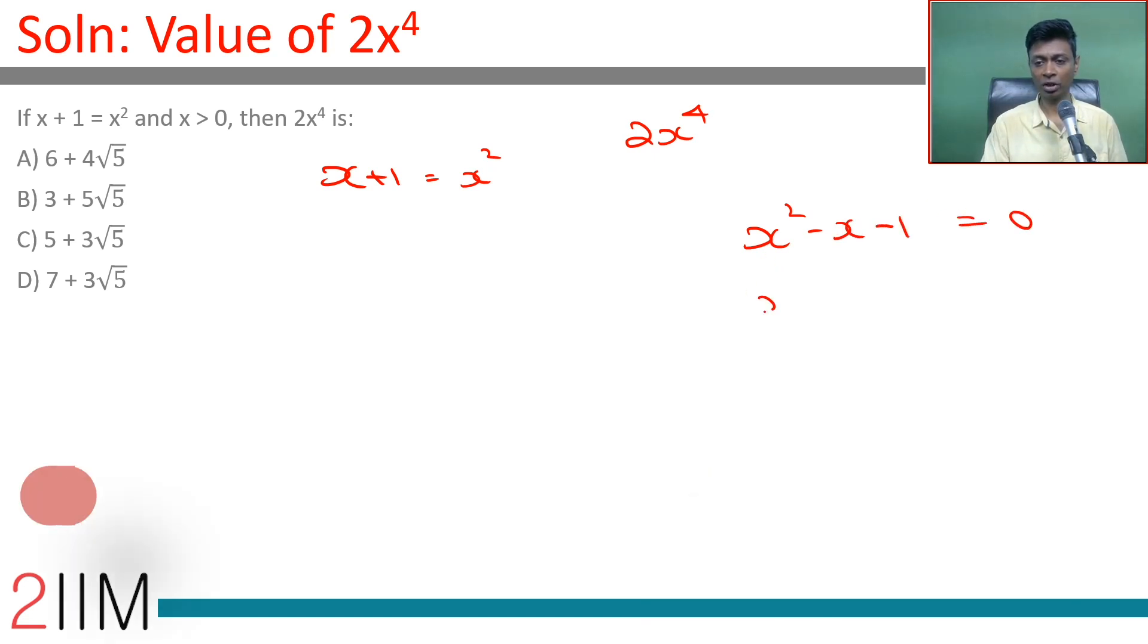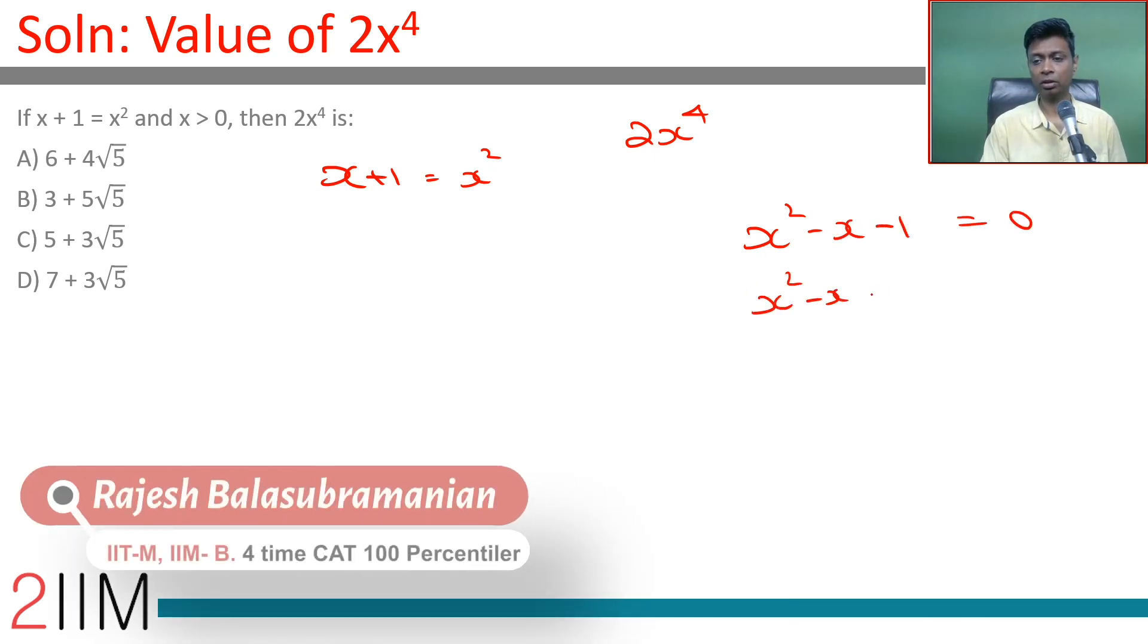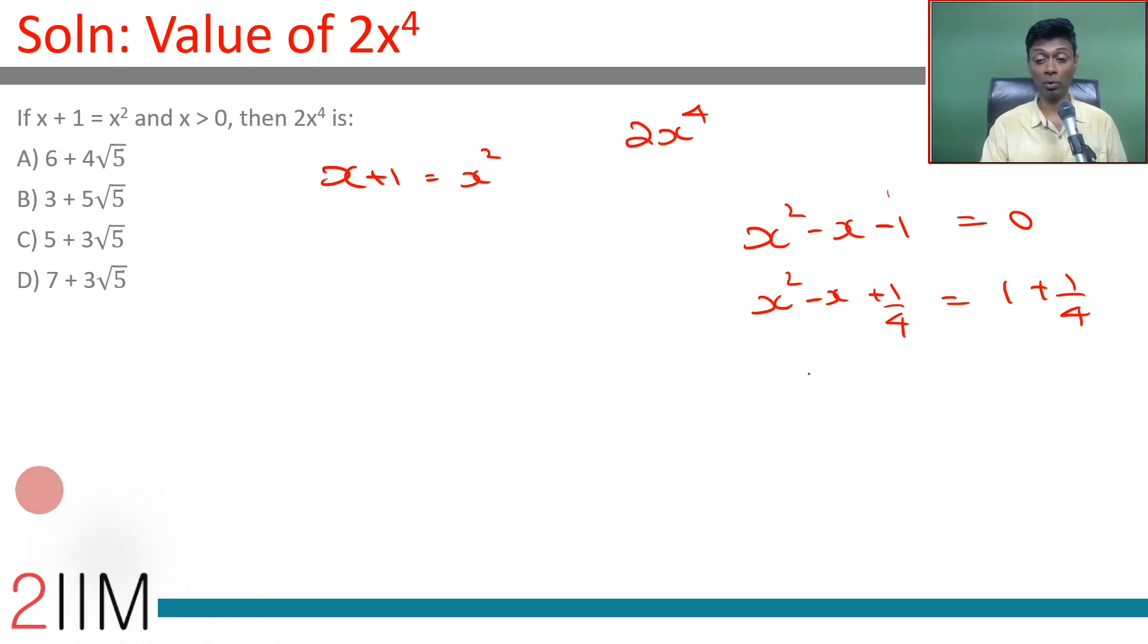x² - x + 1/4 = 1 + 1/4. Take the -1 to this side and add 1/4 to both sides. (x - 1/2)² = 5/4.